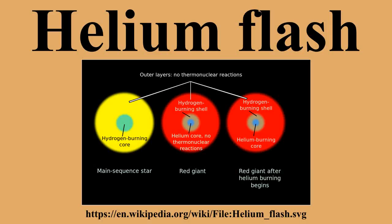The helium flash is not directly observable on the surface by electromagnetic radiation. The flash occurs in the core deep inside the star, and the net effect will be that all released energy is absorbed by the entire core, leaving the degenerate state to become non-degenerate. Earlier computations indicated that a non-disruptive mass loss would be possible in some cases, but later star modeling taking neutrino energy loss into account indicates no such mass loss.